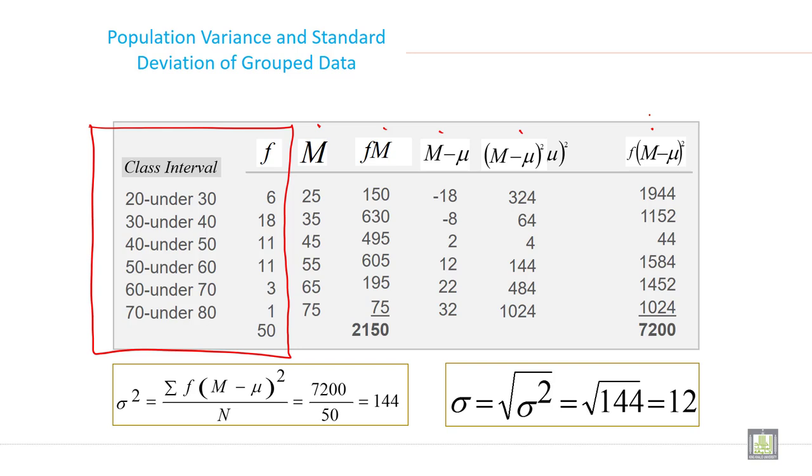So start, if you want to calculate variance and standard deviation just start with the midpoint because you need mean average. So start with midpoint then calculate fM. Till here it is the process to calculate mean. So these two tables you require to calculate the mean of this data.